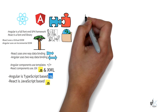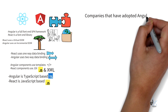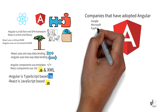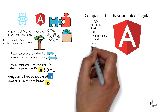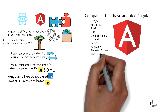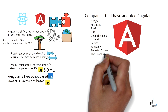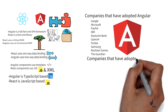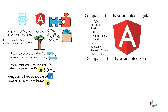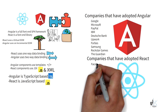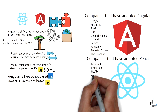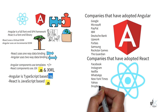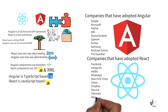The following prominent companies have adopted Angular: Google, Microsoft, PayPal, IBM, Deutsche Bank, Upwork, Forbes, Samsung, Rockstar Games, and The Guardian. The following prominent companies have adopted React: Facebook, Instagram, Netflix, WhatsApp, New York Times, Yahoo, Dropbox, Discord, Uber Eats, and Atlassian.